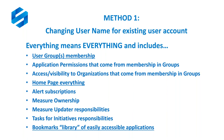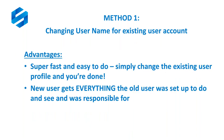Everything includes items from the home page such as alert subscriptions, measure ownership responsibilities, measure updater responsibilities, tasks for initiative responsibilities, as well as the bookmarks library of easily accessible applications that a given user may have established for themselves. One advantage of method one is that it's very fast and easy — you simply change the existing user profile and you're done. Another advantage is that the new user gets everything the old user was set up to do, see, and was responsible for.